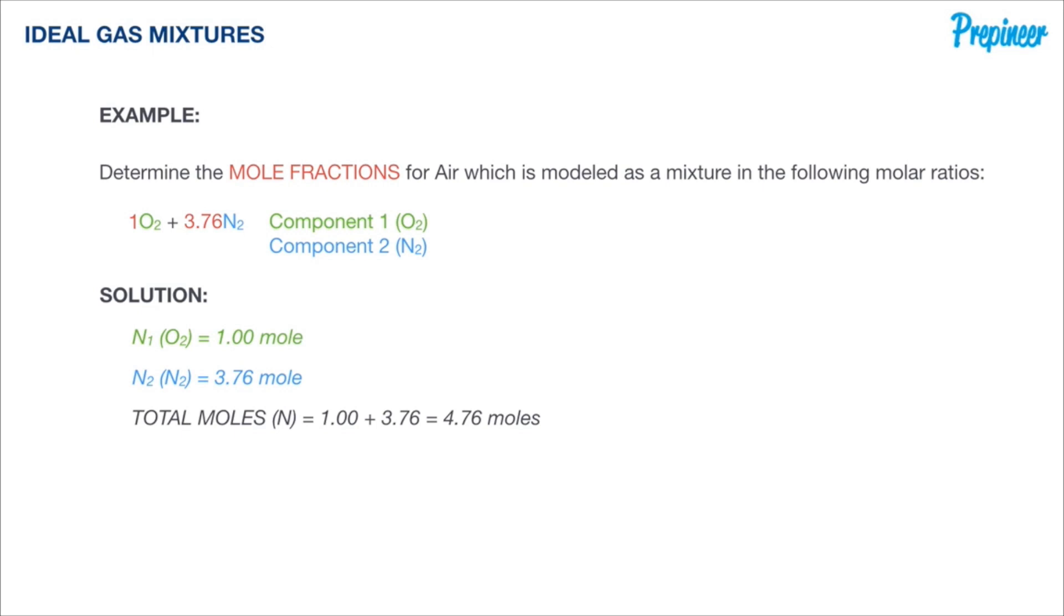Now recall from a few slides ago that the mole fraction is the individual moles of whatever component divided by the total moles of the mixture. With the total moles being 4.76, that's the N within that formula. We just need to take the moles for each individual component and plug them in.